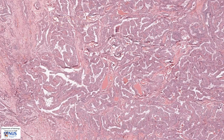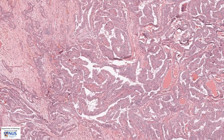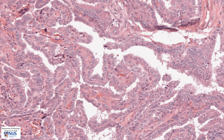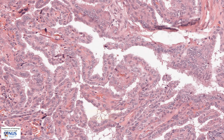Zooming in on these, we can see that these are finger-like structures. We can see that within these papillary structures, right at the core, there is a small blood vessel. So these are fibrovascular cores of papillary structures. Here is another papillary structure with a very slender vessel running within the core. And these papillary structures are lined by neoplastic or malignant follicular cells.